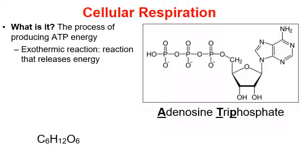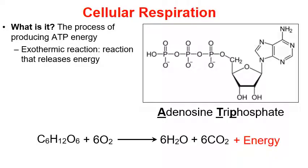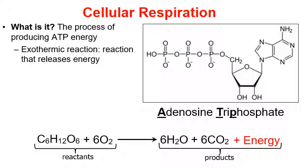If we look at the formula for cellular respiration: a molecule of glucose, C6H12O6, plus oxygen will yield six molecules of water, some carbon dioxide, and energy. Because energy is listed as a product — on the right of the arrow — energy has been released in this chemical reaction, hence an exothermic reaction. The energy that we are referring to are molecules of ATP. ATP is the energy that is released during cellular respiration.